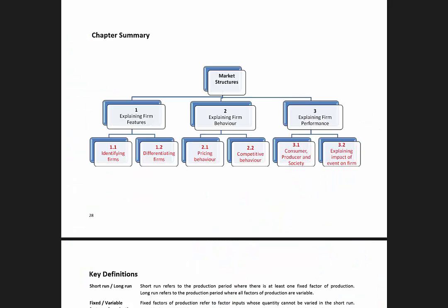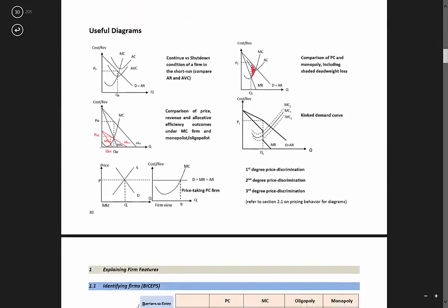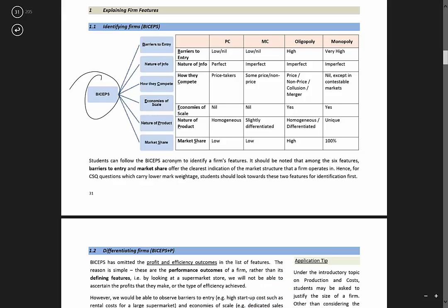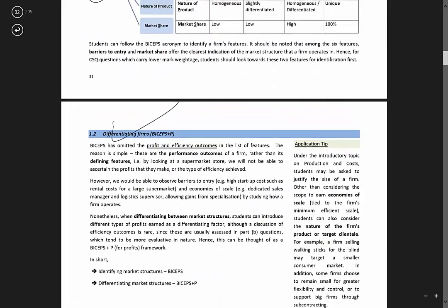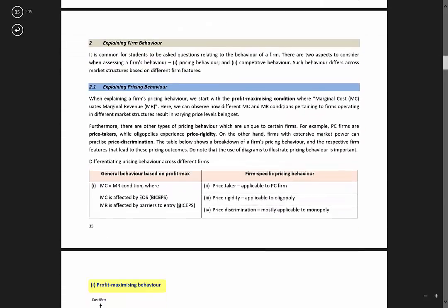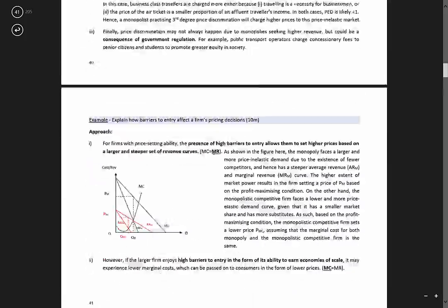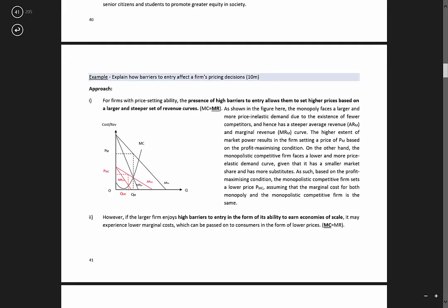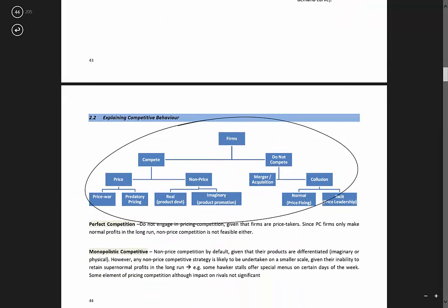Let me briefly show you what I cover in my book as well. Under market structure, I split this into features, behaviour, and performance. Under features, I have identification and differentiation of firms using the BICEPS acronym, with a comparison across the four market structures, showing how you can use this to identify or differentiate firms — so this is the BICEPS plus P framework which I mentioned, with some examples. For behaviour, these are the four things I mentioned under pricing behaviour, with elaboration on each type and an example of how barriers to entry affect pricing behaviour. And the competitive behaviour flow chart is also what I've explained.